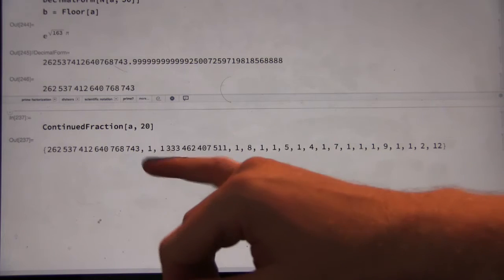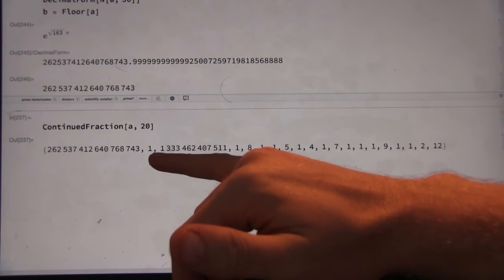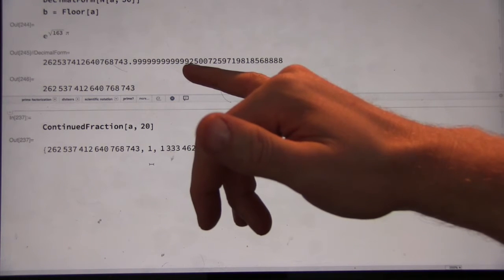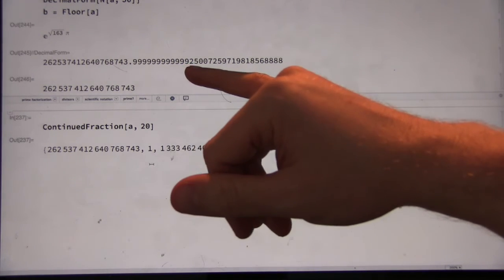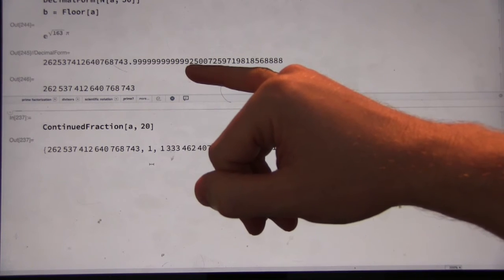And then we have the first approximation, which is just 1. It just tells us that this is the inverse of this part after the decimal point. When you flip it over, it begins with a 1. Why is that, by the way? Why is the inverse of this number, the first digit, a 1?